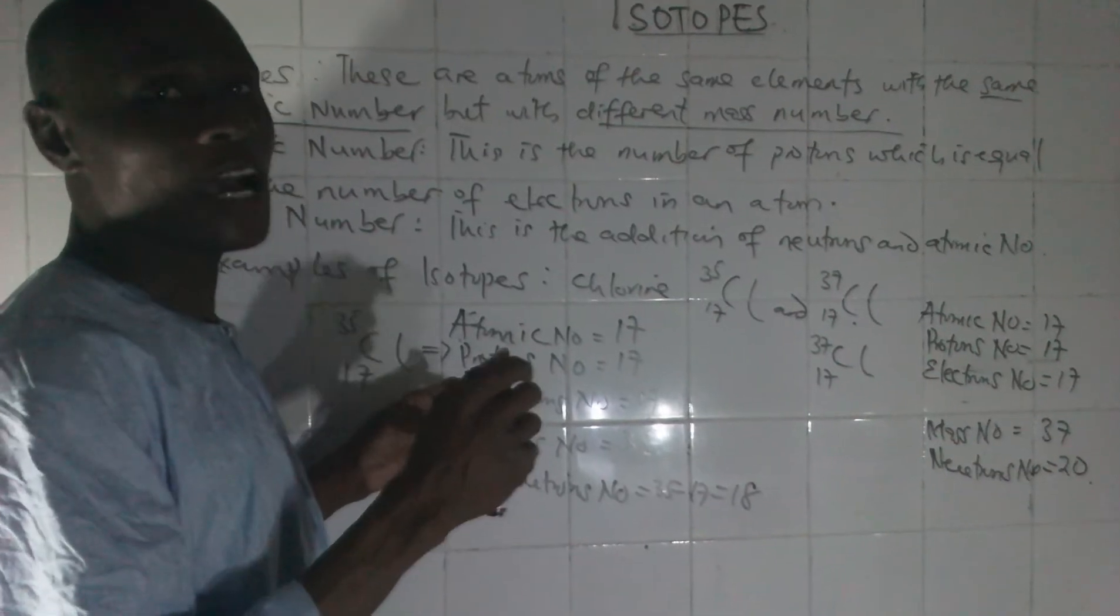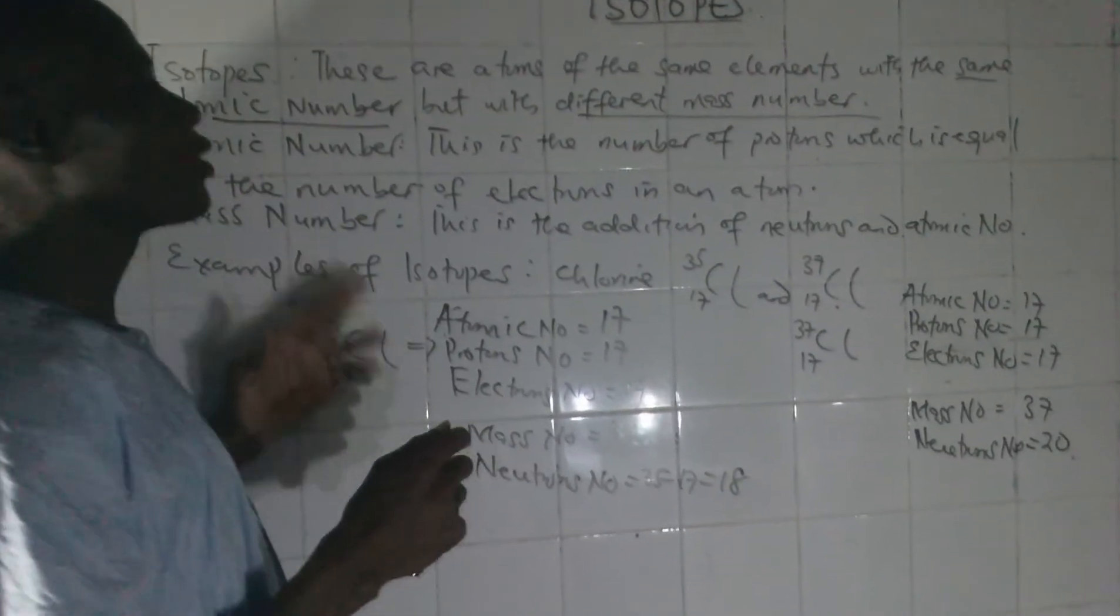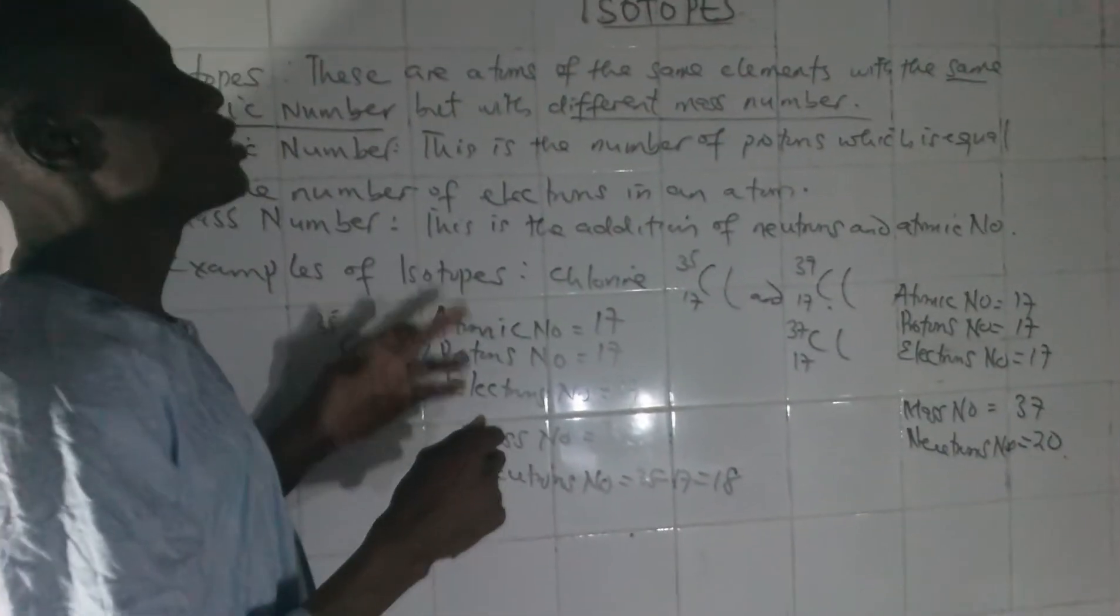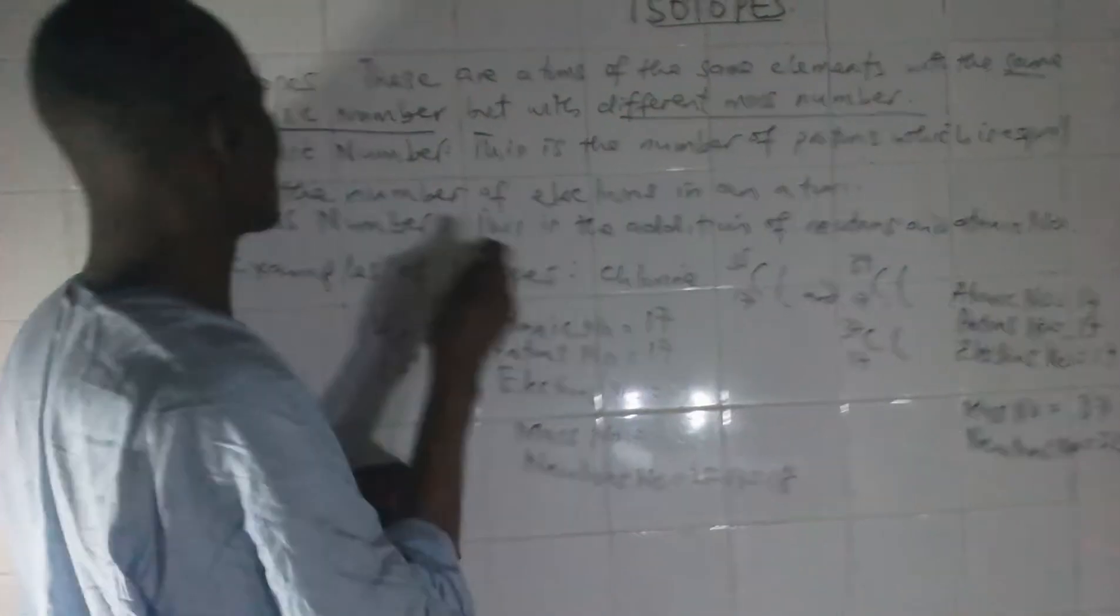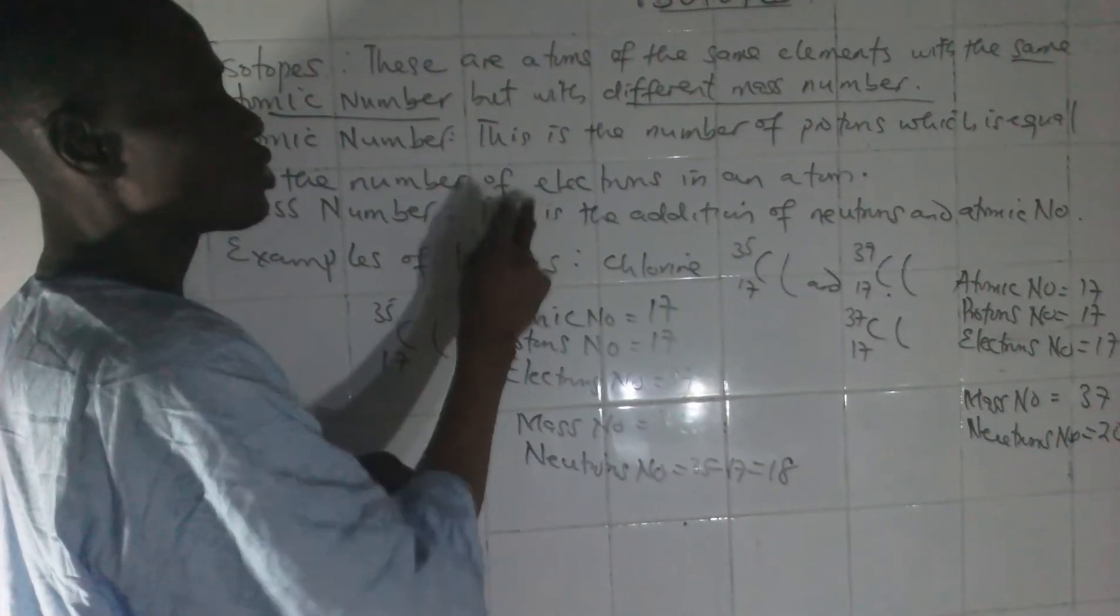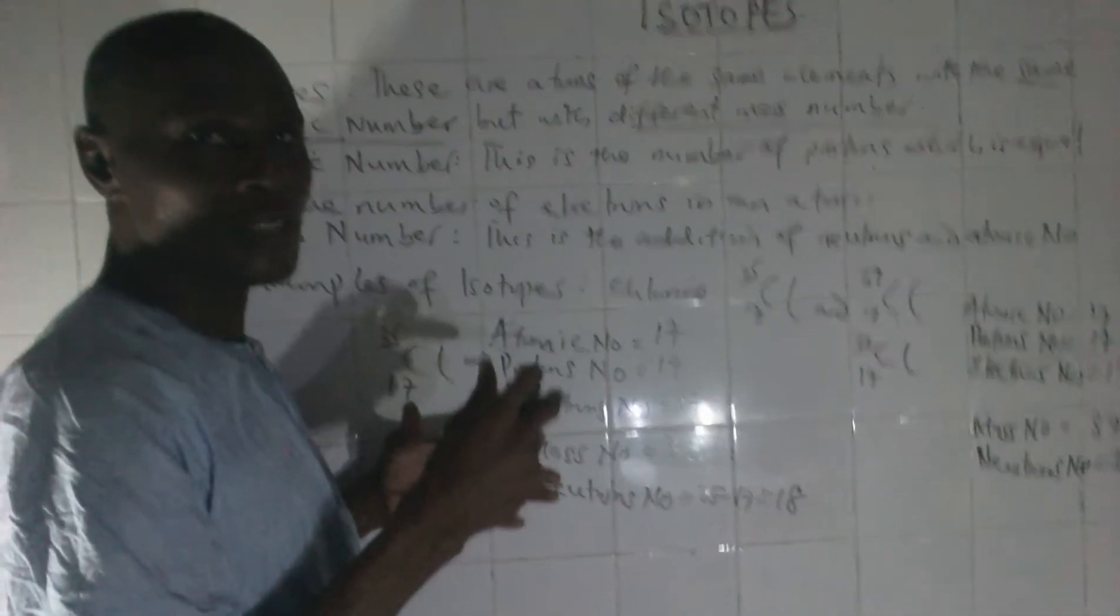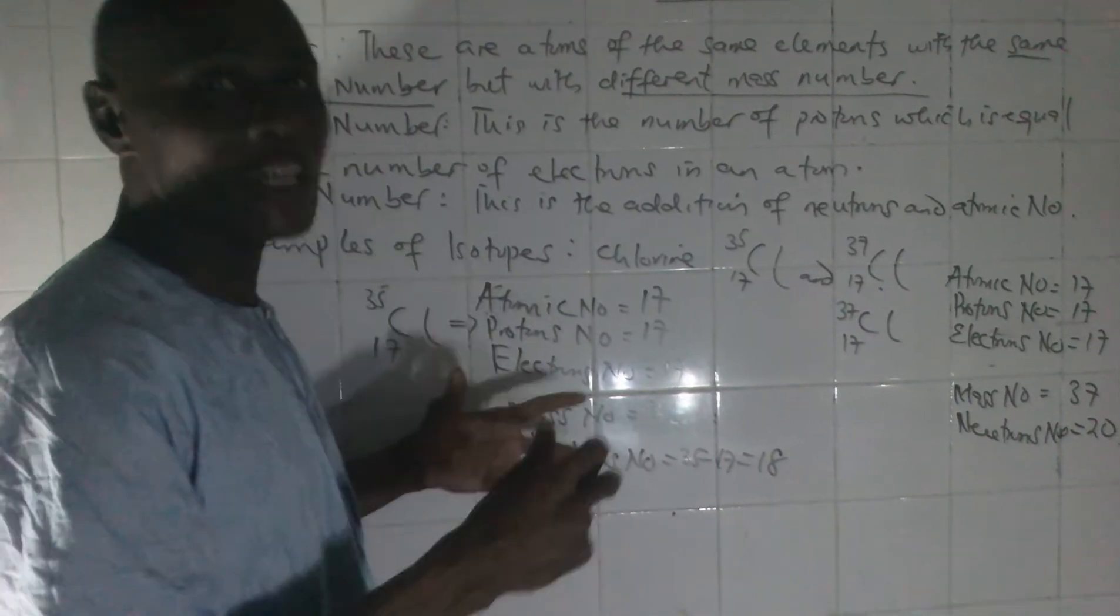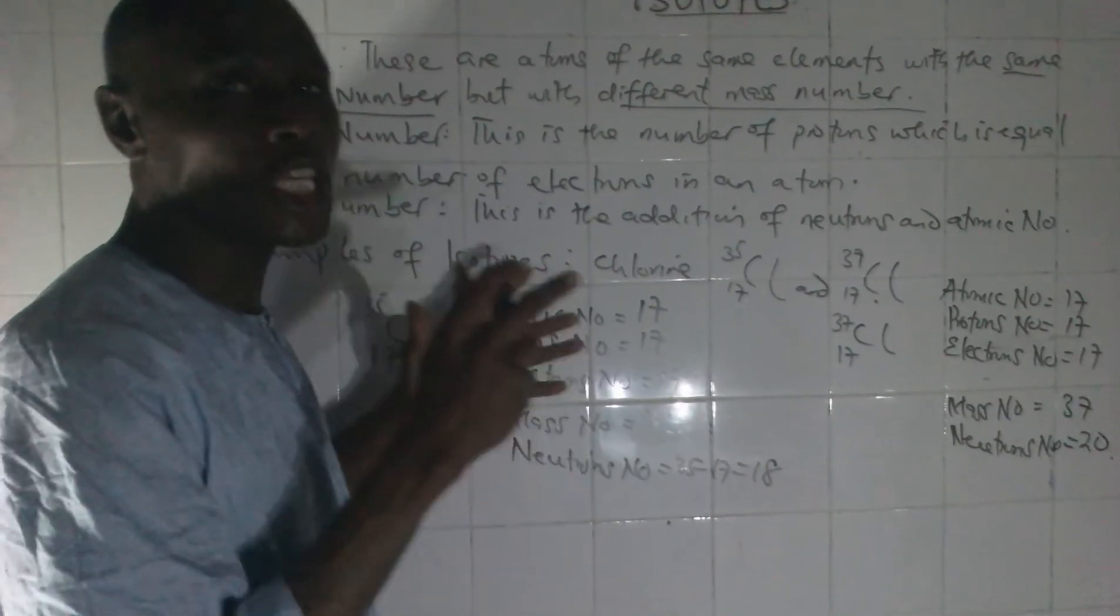Have you said what is isotope? What is atomic number? Atomic number is the number of protons which is equal to the number of electrons in an atom.